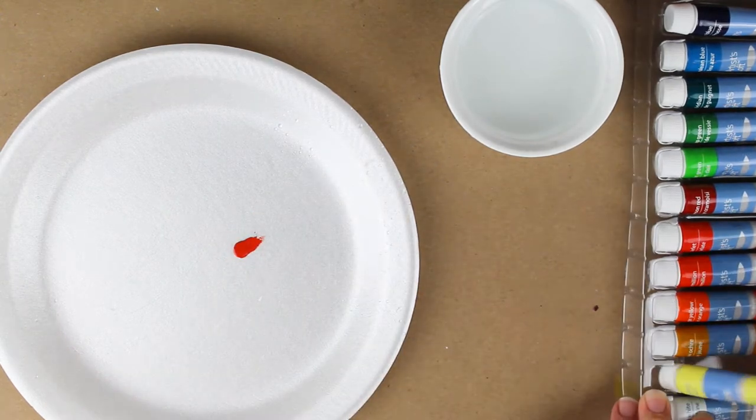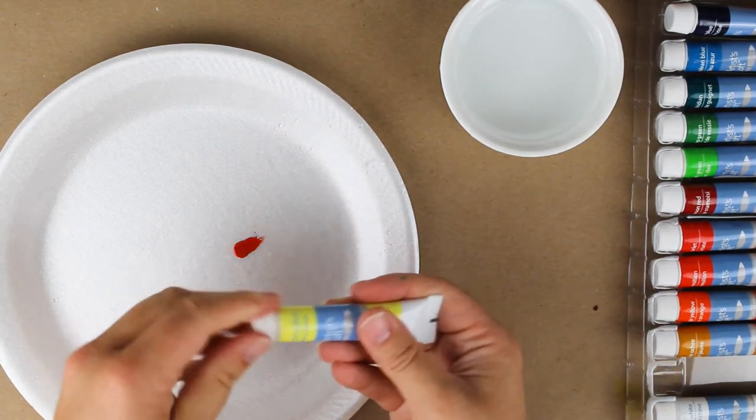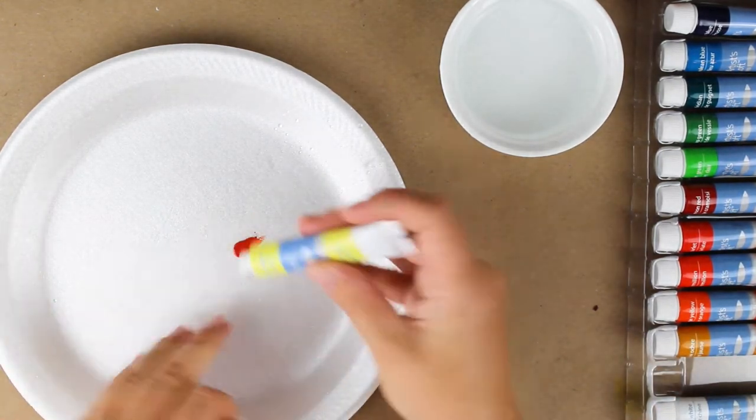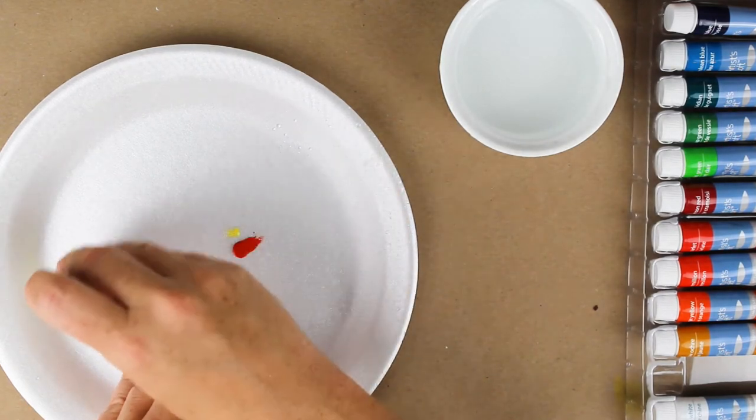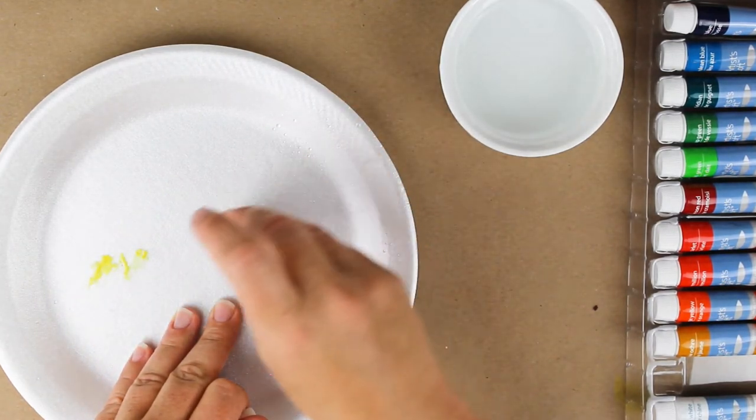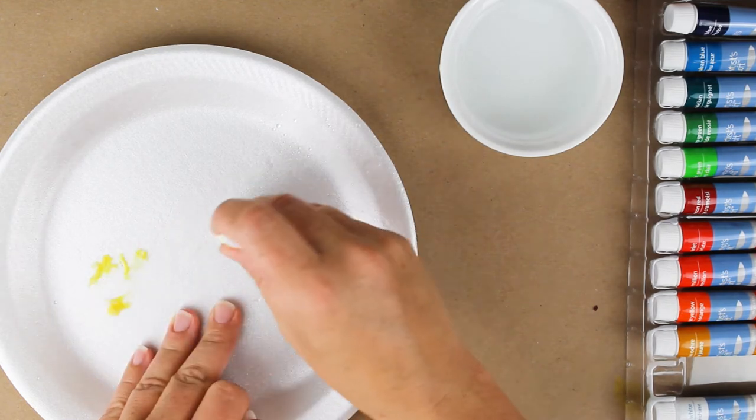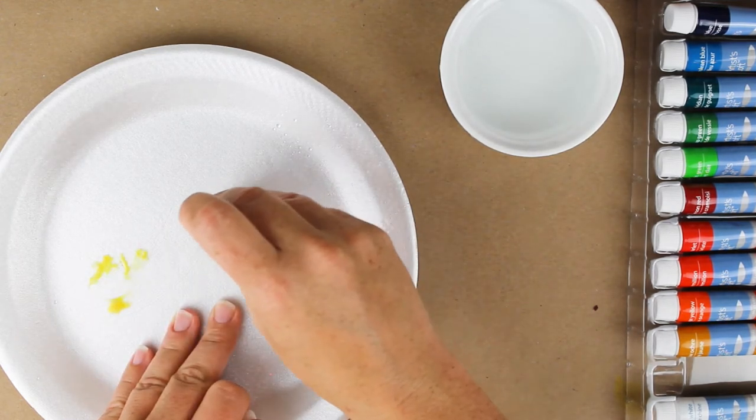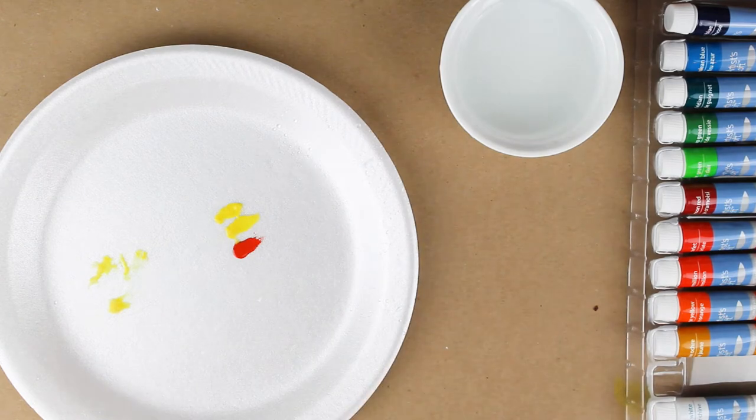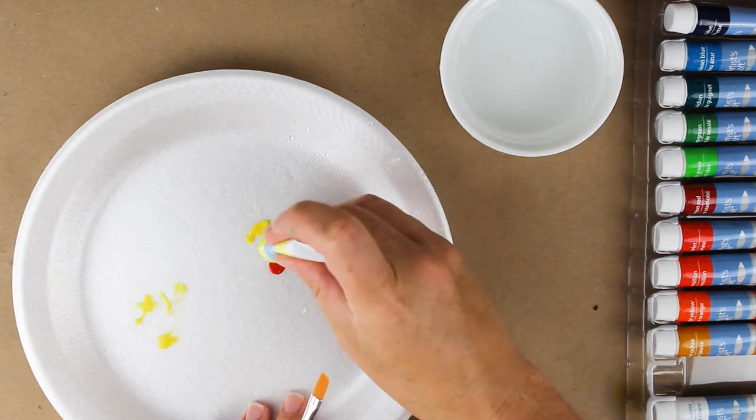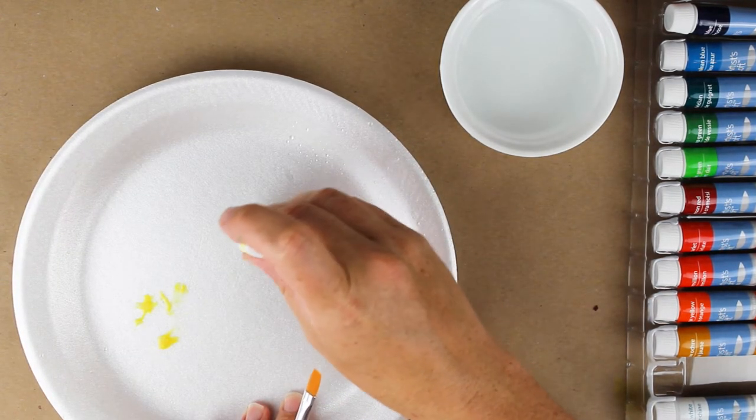We're going to start with one part of the vermilion and two parts of a lemon yellow. Now this lemon yellow was a little goopy at the top so I'm trying to get rid of some of the excess water at the top and make sure that I have two equal parts here.